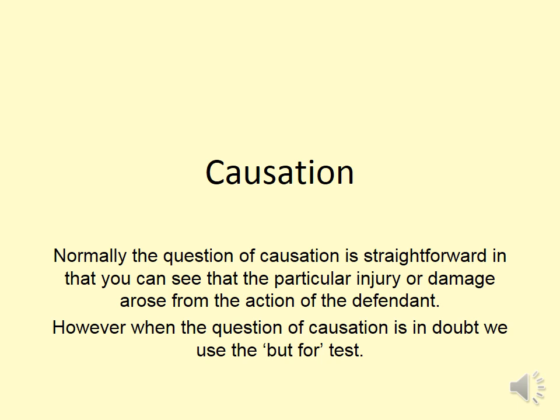Let's look at the term causation — this will come up in criminal law as well. What we're looking at is: did the defendant's actions cause the outcome? That is what causation means, and it's known as a causal link or chain of causation. Usually causation is quite straightforward, where you can see that a particular injury arose from the defendant's action. However, sometimes if causation is in doubt and it's not absolutely clear the defendant caused the harm, we use what's known as the but-for test.